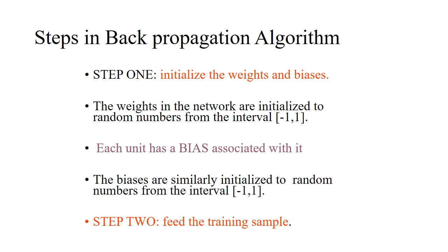The weights in the network are initialized to random numbers from the interval minus 1 to 1. Each unit has a bias associated with it; biases are similarly initialized to random numbers from the interval minus 1 to 1. Step 2 is to feed the training sample.